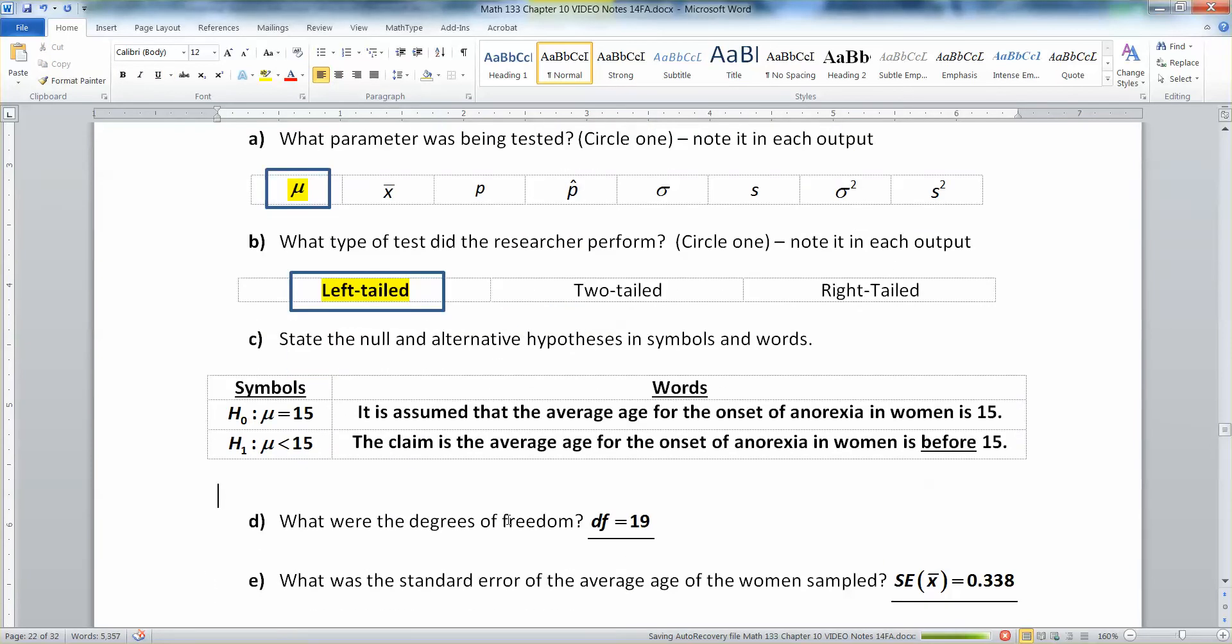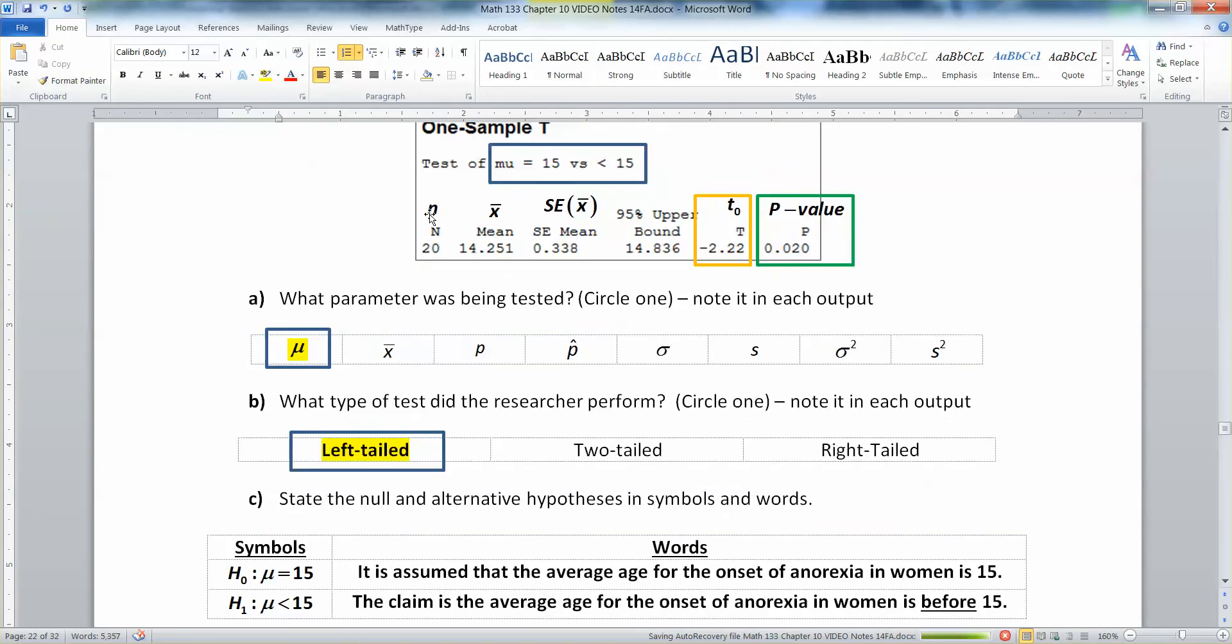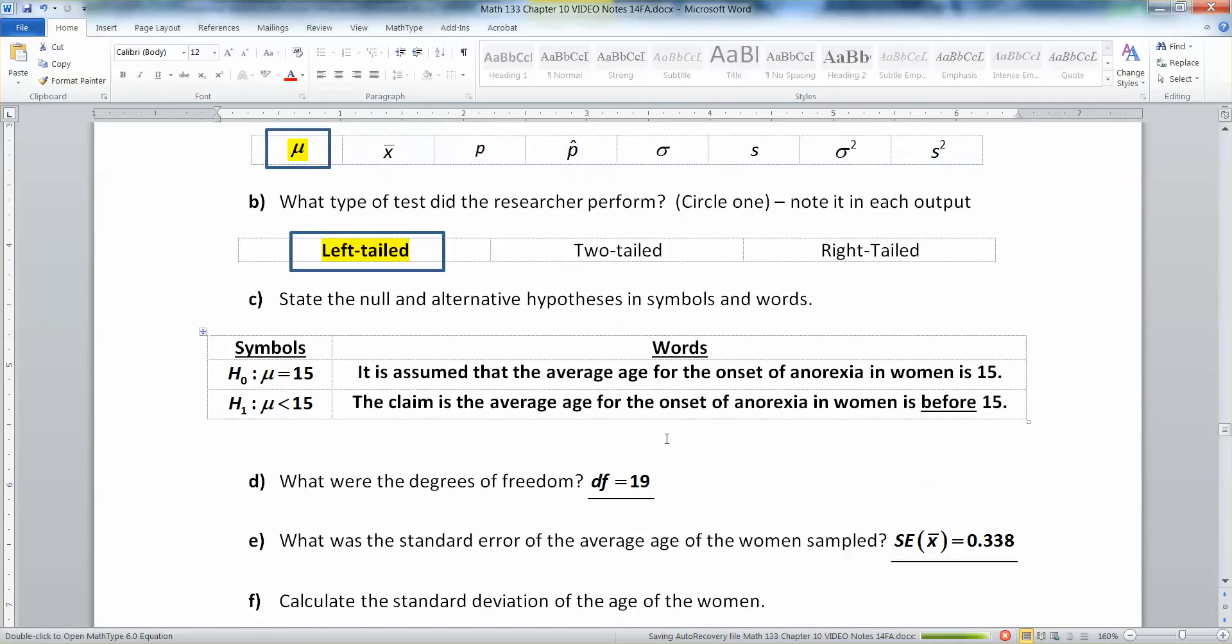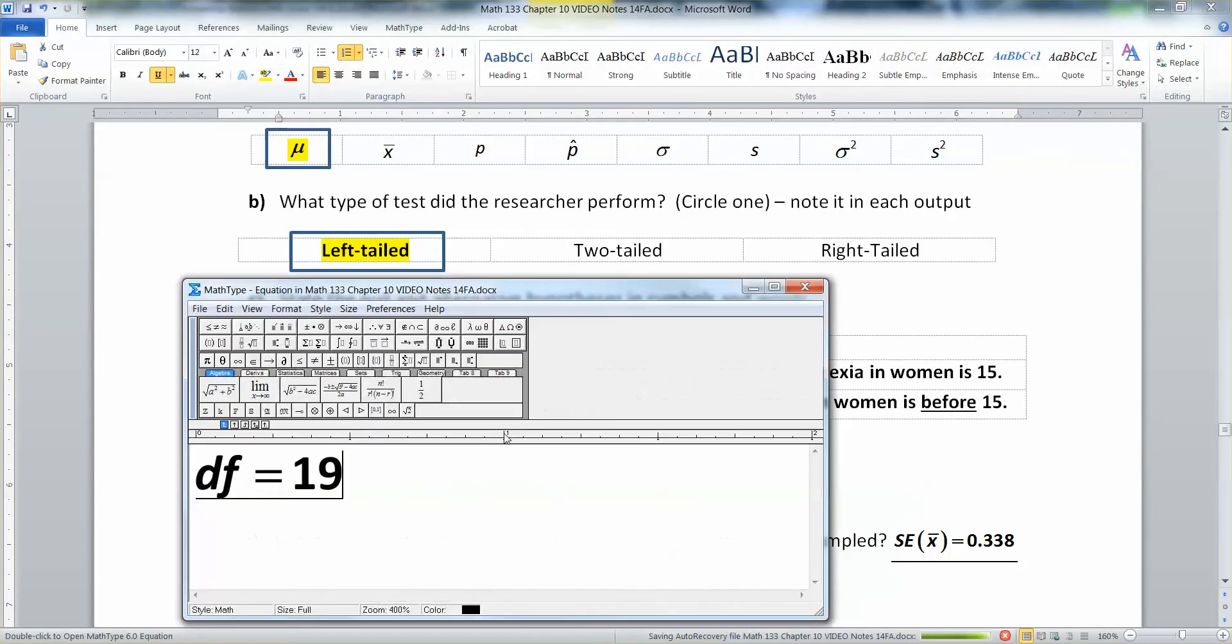All right so what were the degrees of freedom? Let's see now it's a little bit strange but Minitab actually uses the capital letter N but it doesn't really mean it. It's really the lowercase n. This n right here is your sample size. Since it's your sample size, it's 20, your degrees of freedom then is 19 because remember degrees of freedom is n minus 1, which is 20 minus 1, which is 19.